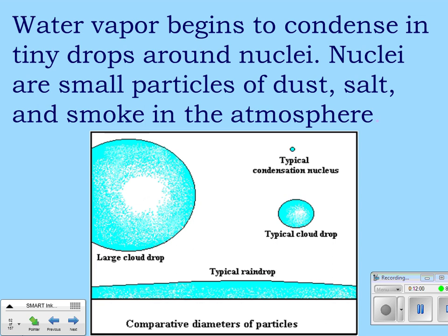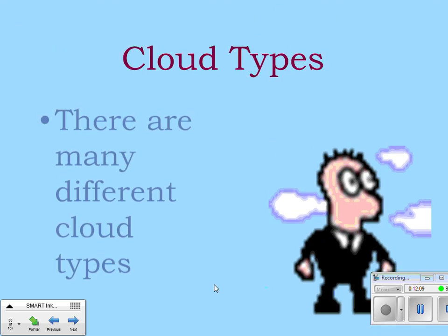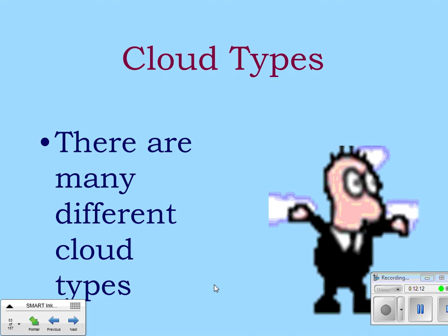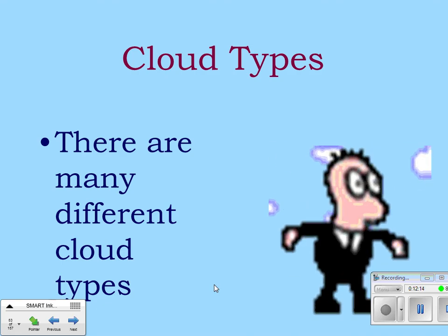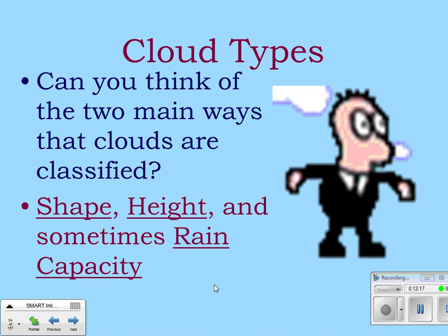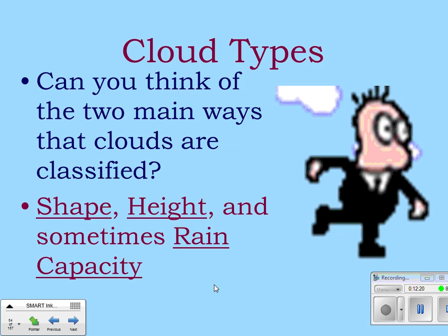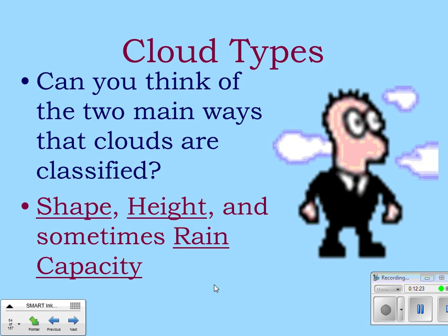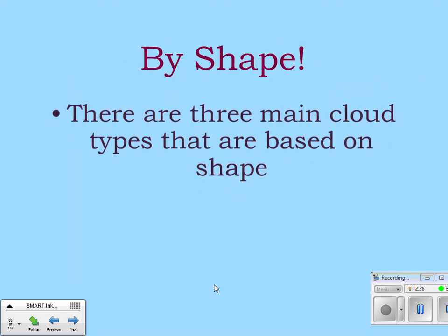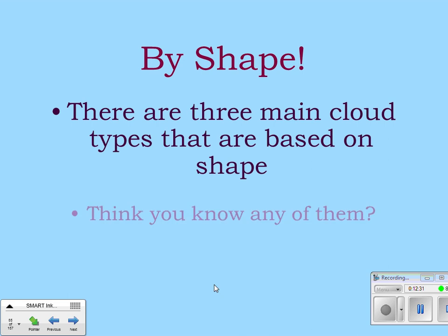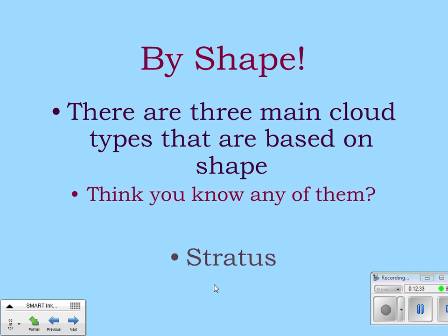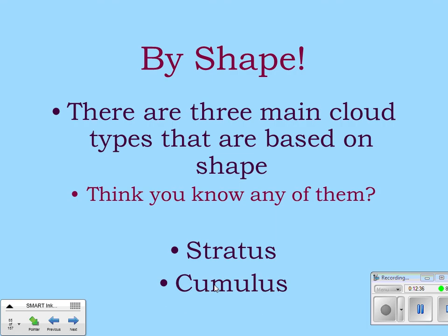There are many different cloud types, but three main ones. We classify clouds by their shape, their height, and sometimes their rain capacity. The three main shapes are stratus, cumulus, and cirrus clouds.